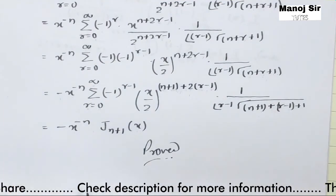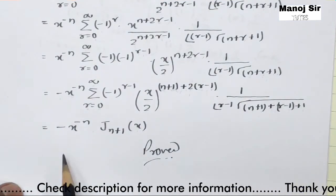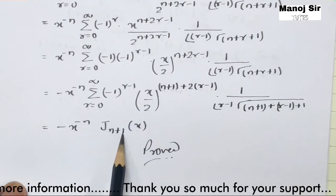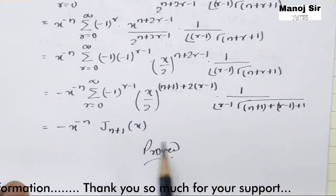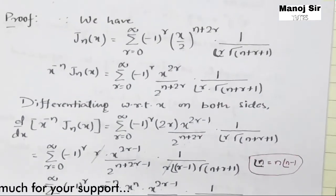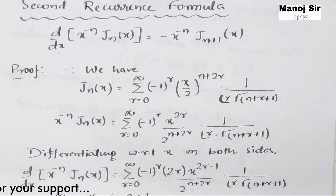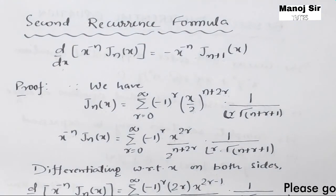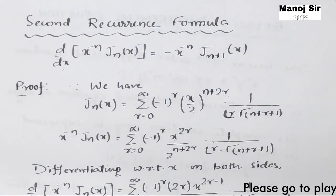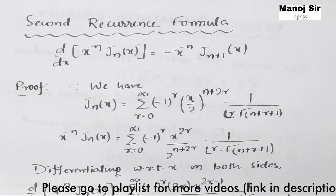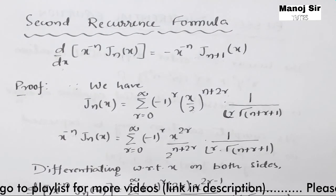Therefore the result is minus x^{-n} times J_{n+1}(x), which is exactly the second recurrence formula. Hence proved. I hope you learned a lot from this video — please hit the like button and share the playlist of this chapter with your friends. Thank you.